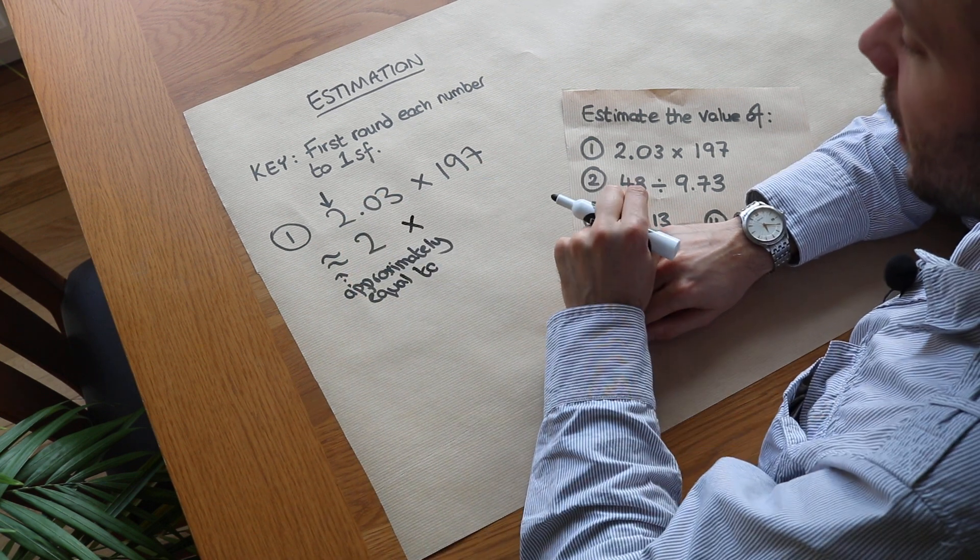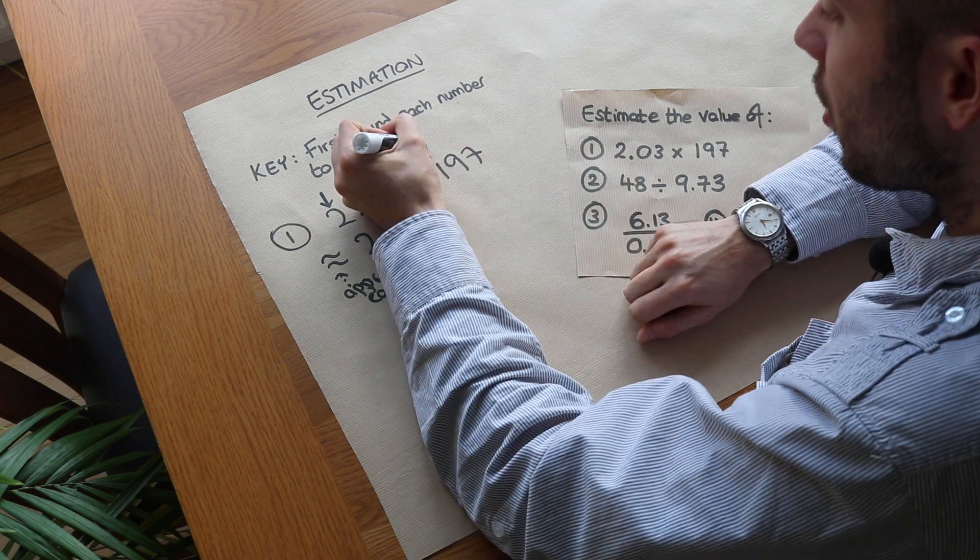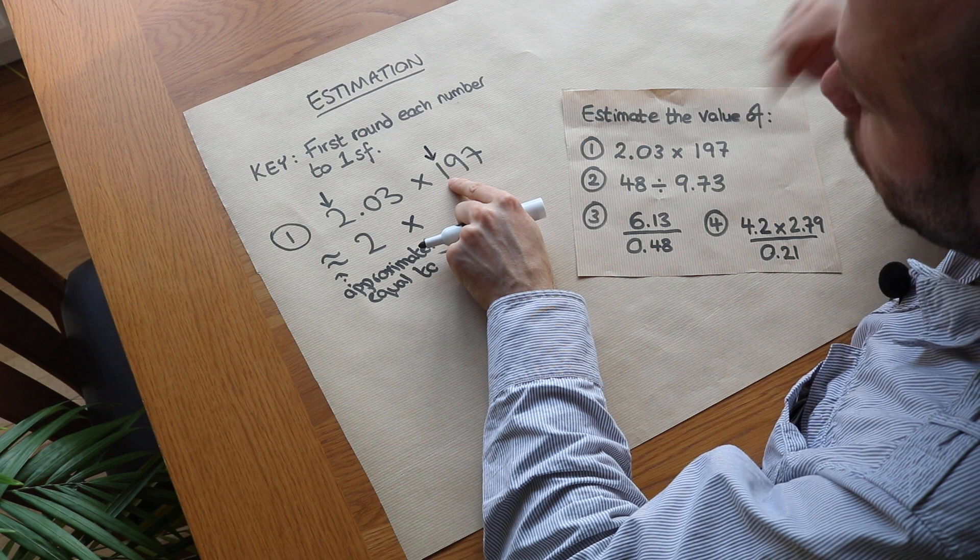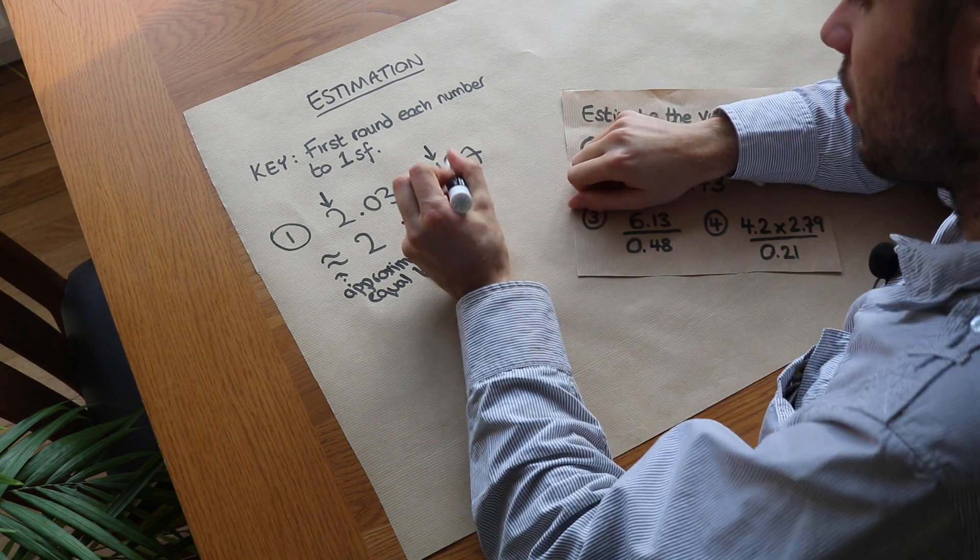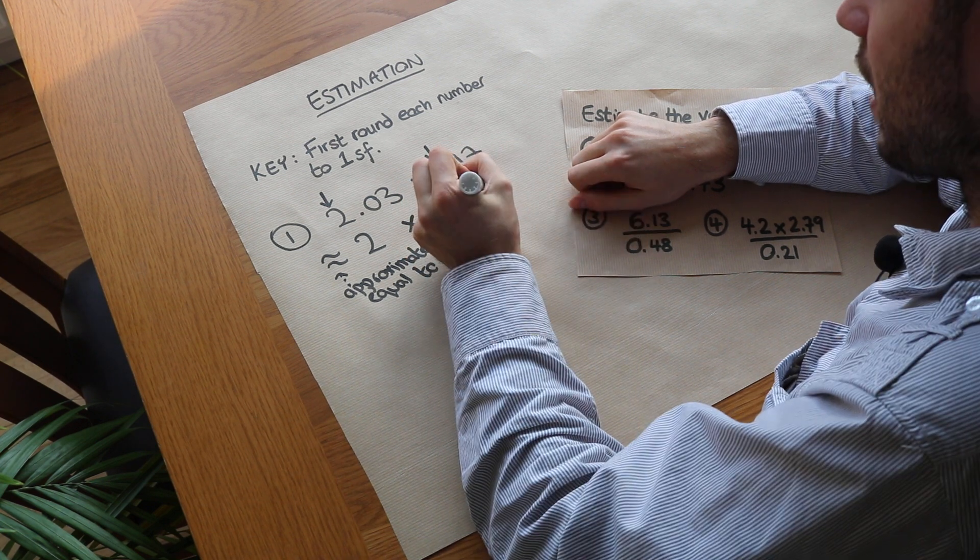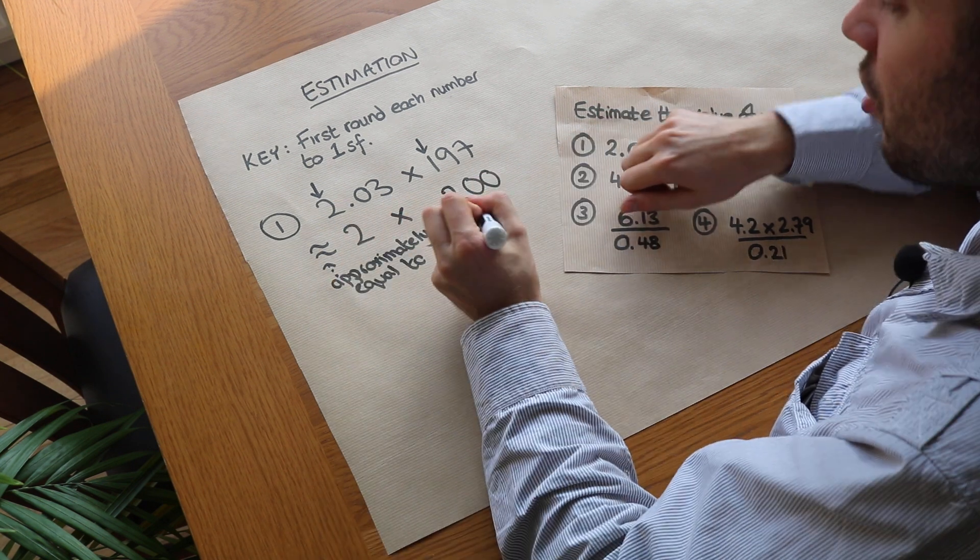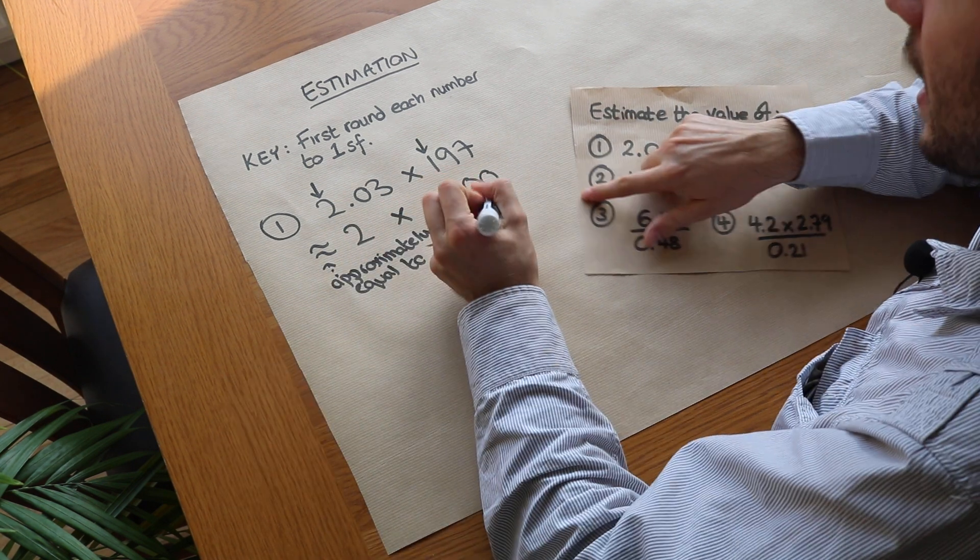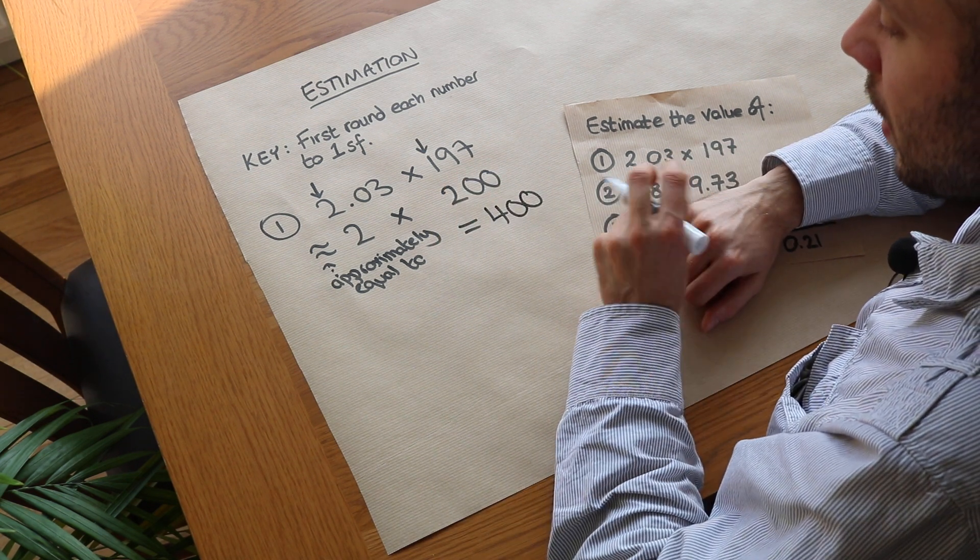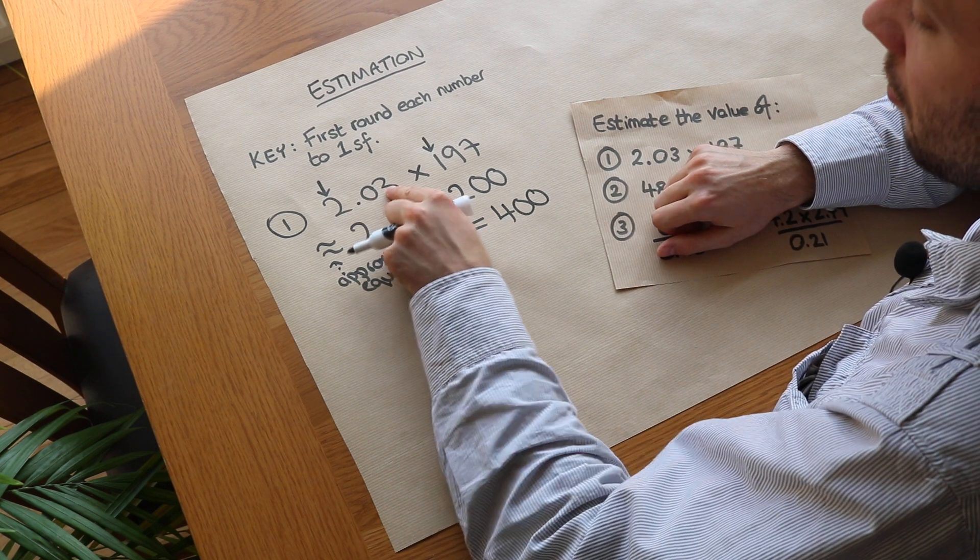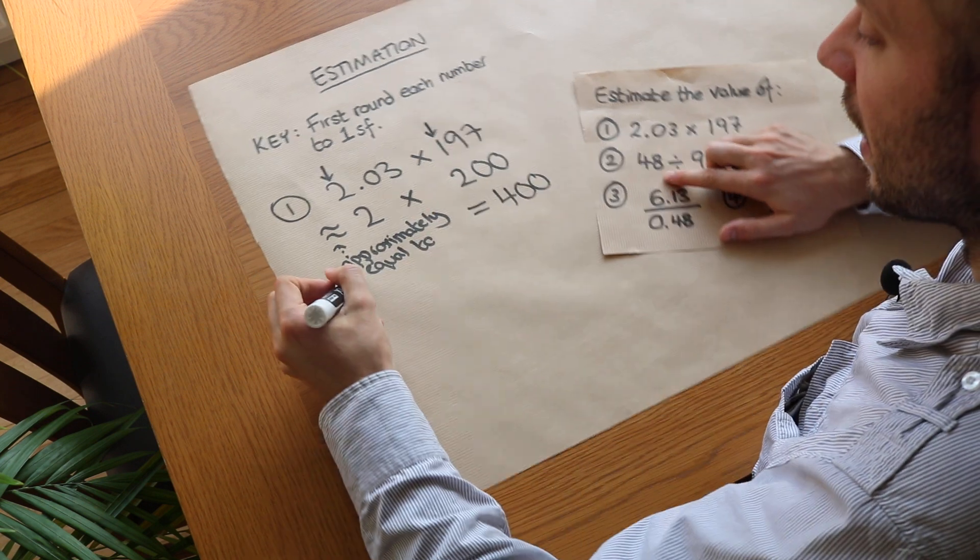Let's do the same with the second number here. What's this to one significant figure? We look at the first non-zero digit and check the next digit. Is that greater or equal to 5? Yes it is, so that 1 goes up to 2 and anything after it gets replaced with 0, so it's 200. Now what is 2 times 200? We can easily do it in our head and that's 400. So that's roughly what 2.03 times 197 is, but we've managed to do it very quickly and in our heads.